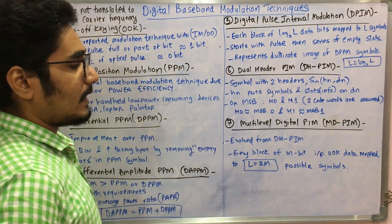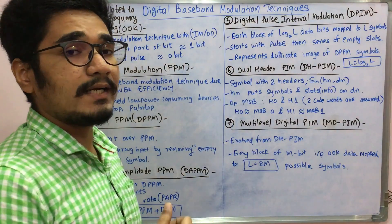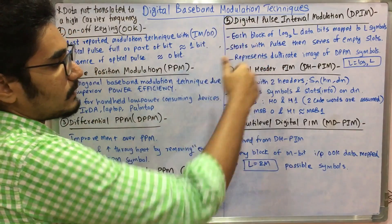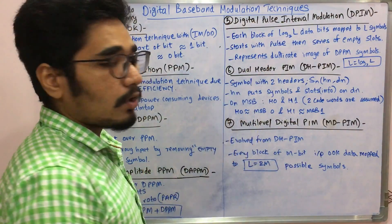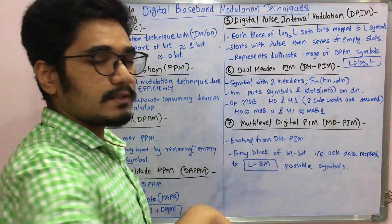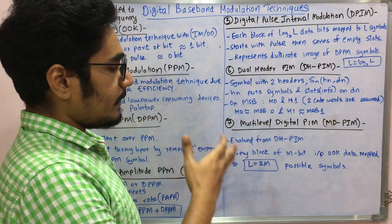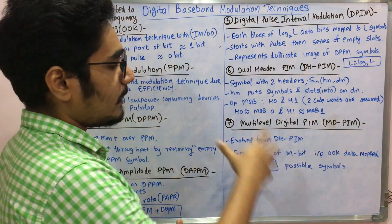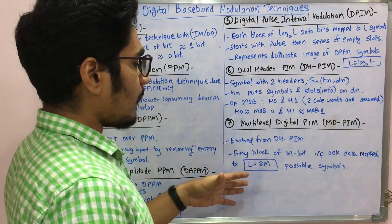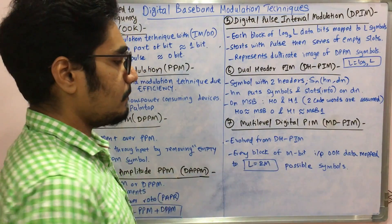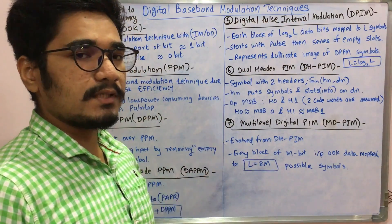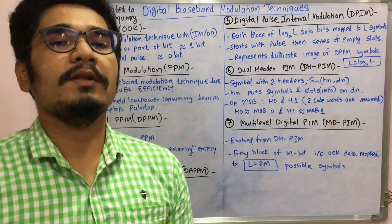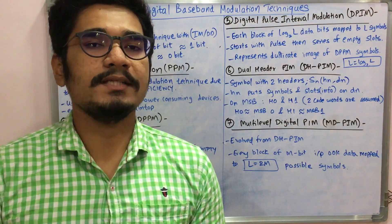The final technique is Multi-level Digital PIM (MD-PIM). It evolved from DH-PIM, and here every block of M-bit data is divided into M bits. The data comes from the input OOK (On-Off Keying) signal, and the data is mapped to L = 2^M possible symbols. The modulation is then carried out using various equipment. That covers all the digital baseband modulation techniques in wireless technology.